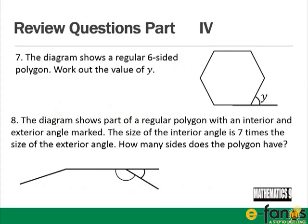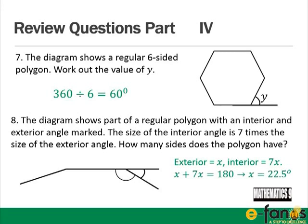Part 4: A regular 6-sided polygon — work out the value of y. Answer: 360 / 6 = 60 degrees. Part 8: The interior angle is 7 times the exterior angle. So x + 7x = 180, giving x = 22.5°. Then 360 / n = 22.5, so n = 16; the polygon has 16 sides.